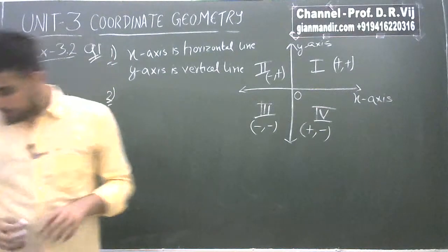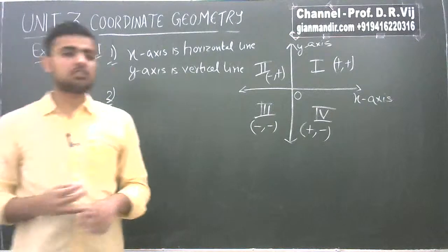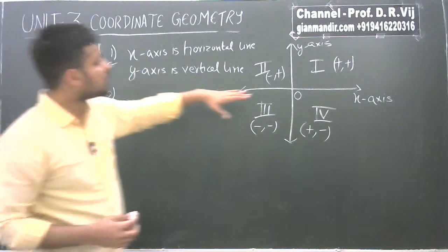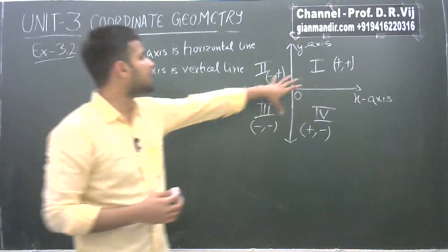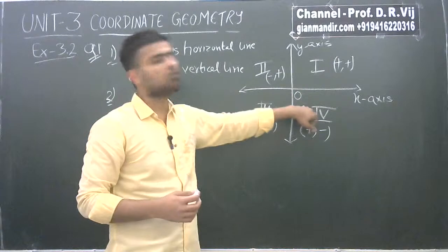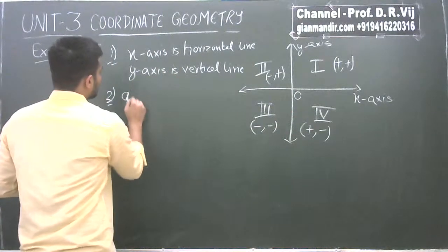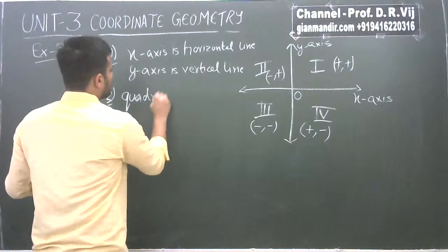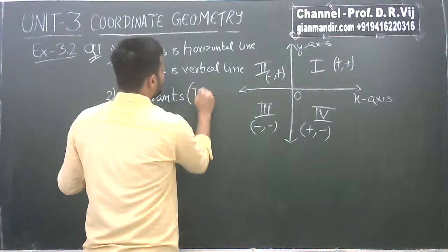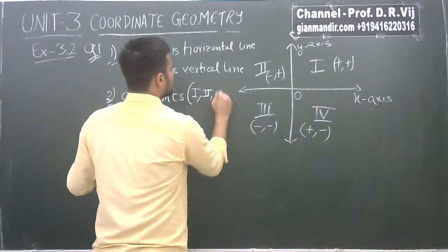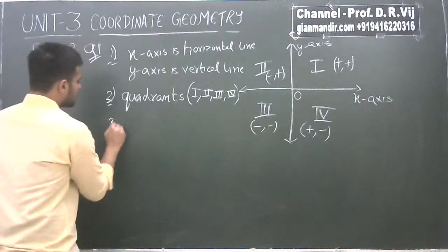Now the second part says: what is the name of each part of the plane formed by these two lines? They are asking what we call each part — this part, this part, this part. They are known as quadrants. There are four quadrants: first, second, third, and fourth.